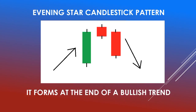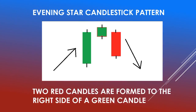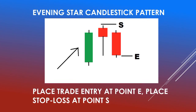The evening star candlestick pattern forms at the end of a bullish trend. Two candles are formed to the right side of a green candle. In one instance we have a small green candle, and in another instance we have a small red candle — but in both cases the two candles form to the right side of a green candle.